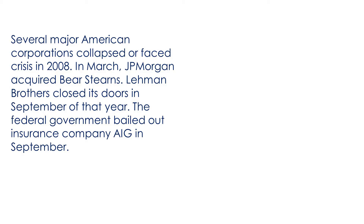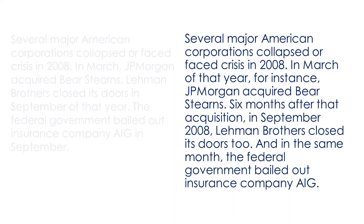Here's the paragraph: 'Several major American corporations collapsed or faced crisis in 2008. In March, JP Morgan acquired Bear Stearns. Lehman Brothers closed its doors in September of that year. The federal government bailed out insurance company AIG in September.' Once more, we've got strong individual sentences — these sentences are clear and concise — but the paragraph lacks flow. We can enhance the flow of this paragraph and build stronger links between these sentences, all of which have different subjects, by using sequencing. Here's a revised version: 'Several major American corporations collapsed or faced crisis in 2008. In March of that year, for instance, JP Morgan acquired Bear Stearns.'